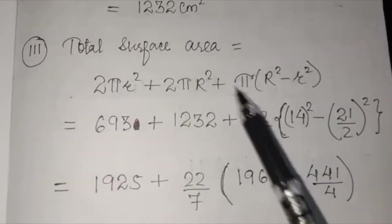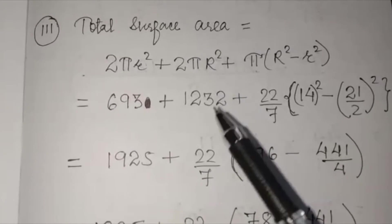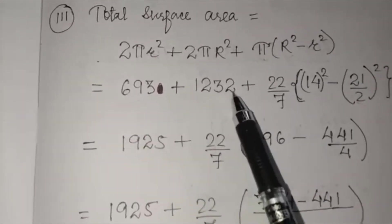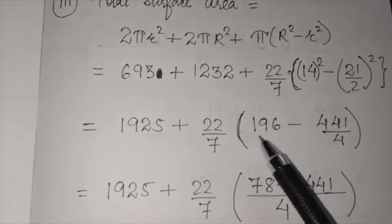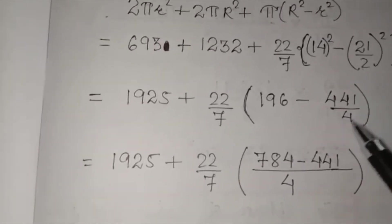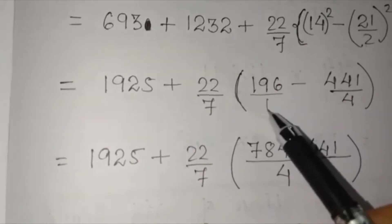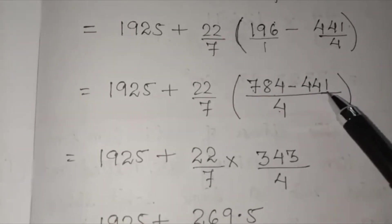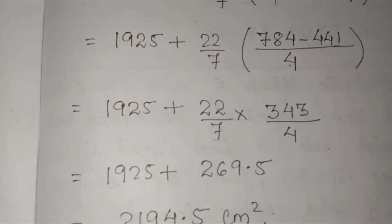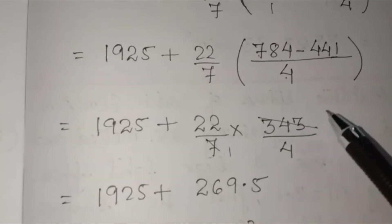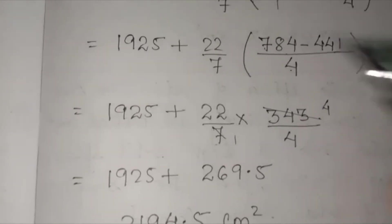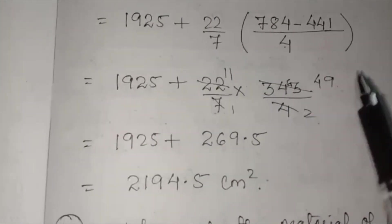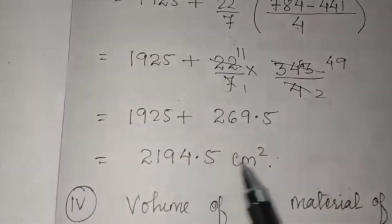Total surface area = internal + external + area of ring = 693 + 1232 + π(R² − r²). With π = 22/7, R = 14, r = 21/2: R² = 196, r² = 441/4. Taking LCM of 4: (784 − 441)/4 = 343/4. Multiplying by 22/7 gives 269.5. Total = 693 + 1232 + 269.5 = 2194.5 cm².